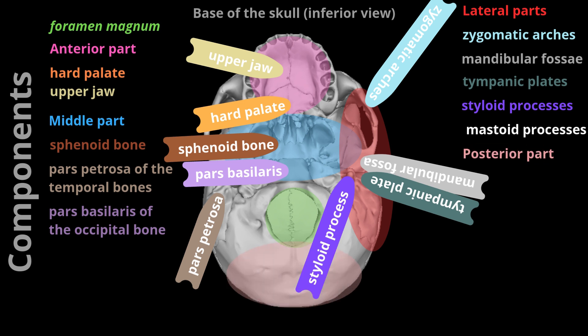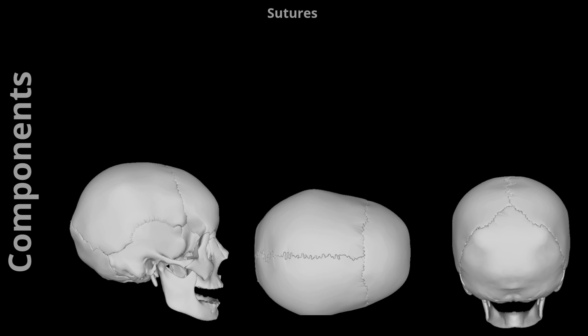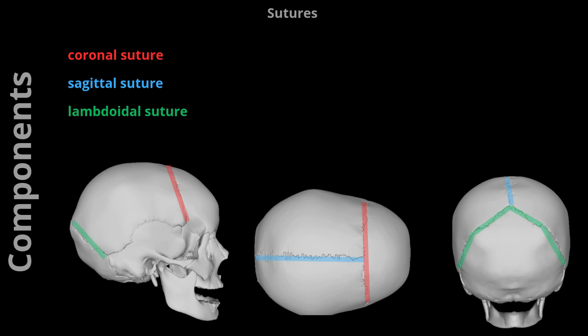The most important sutures in the human skull are: the coronal suture, between the frontal and parietal bone; the sagittal suture, dividing both parietal bones; and the lambdoidal suture, running horizontally between the occipital bone and both parietal bones. These are the three most significant of all 33 sutures formed by the human skull bones.